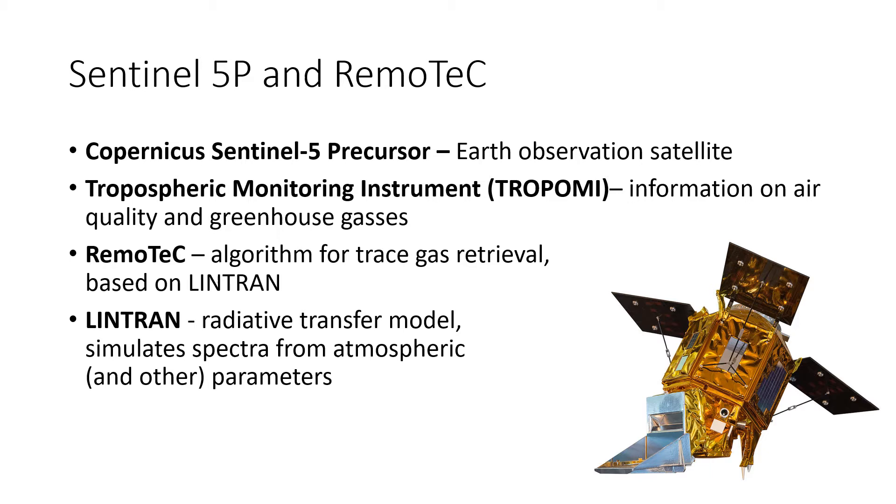Sentinel-5 precursor is an Earth observation satellite that was launched in 2017. It features the tropospheric monitoring instrument, TROPOMI, a spectrometer that provides global information on air quality and greenhouse gases, such as carbon monoxide, methane and water vapor. In order to extract information on the concentration of trace gases, a retrieval algorithm needs to be run.